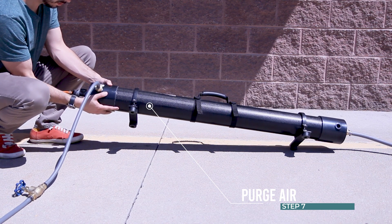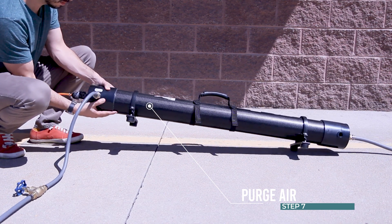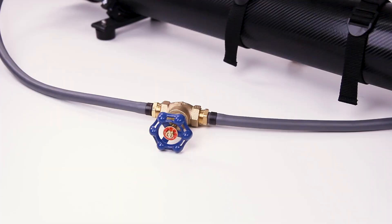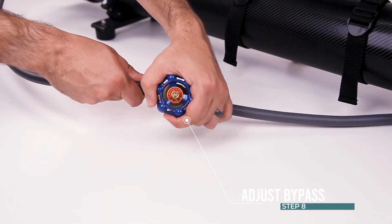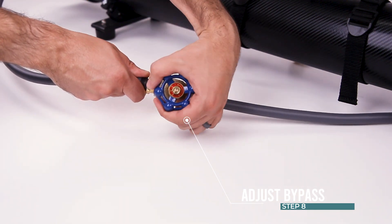Step 8: Once the air has been purged out of the filters, close the bypass valve partially to begin producing pure water. Do not close off flow through the bypass line while using the system. Some bypass water should always be flowing out.